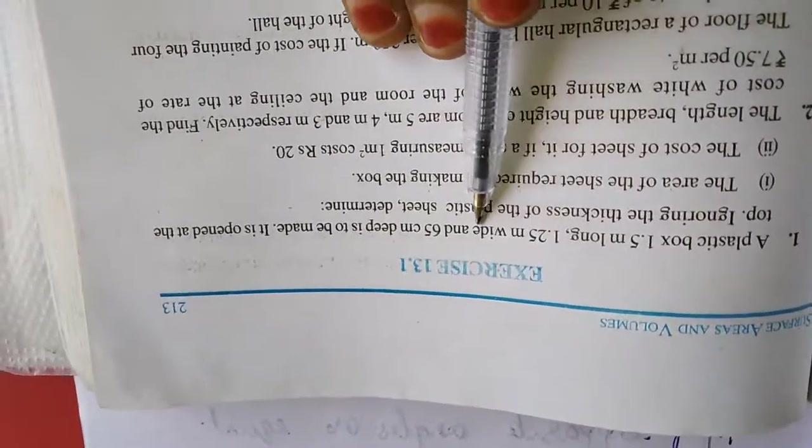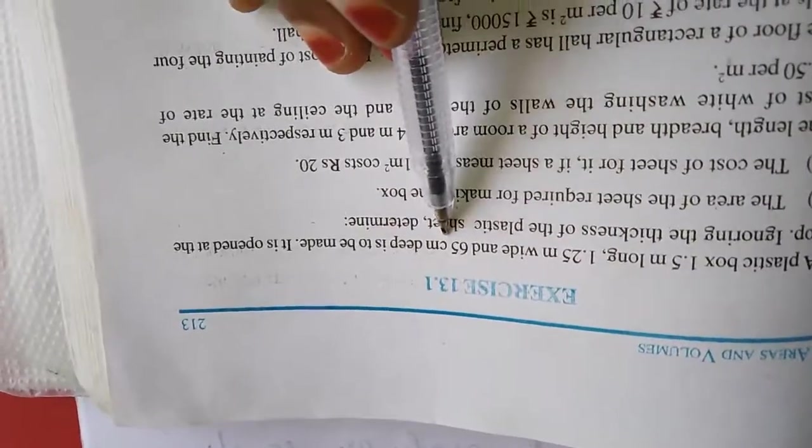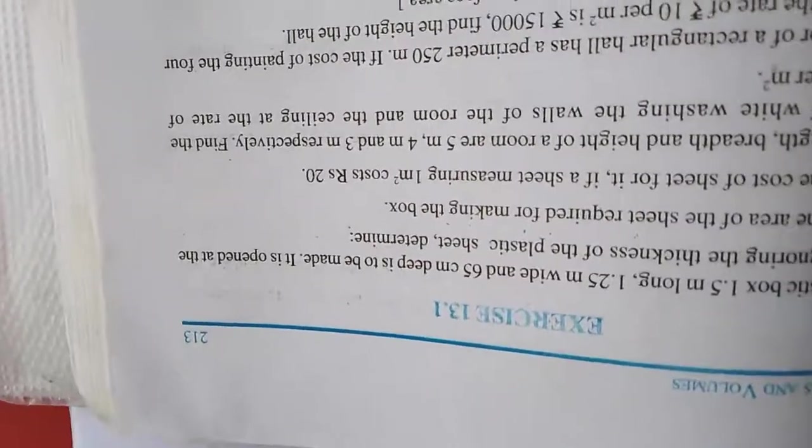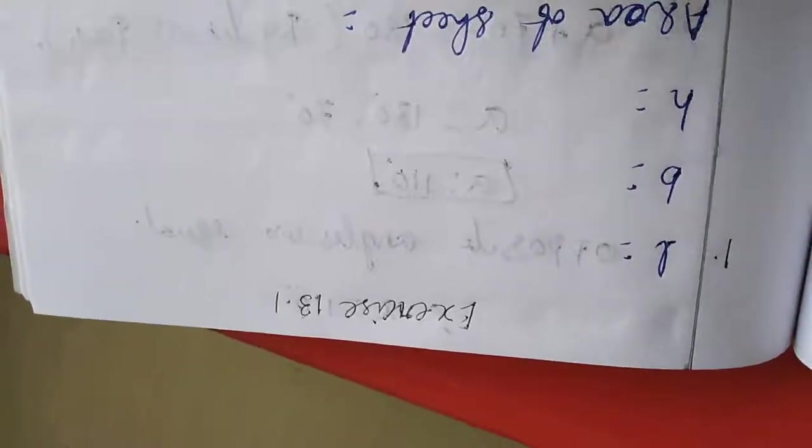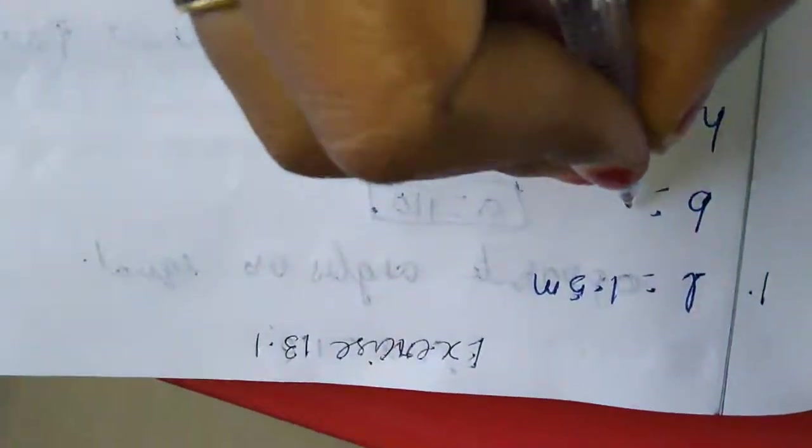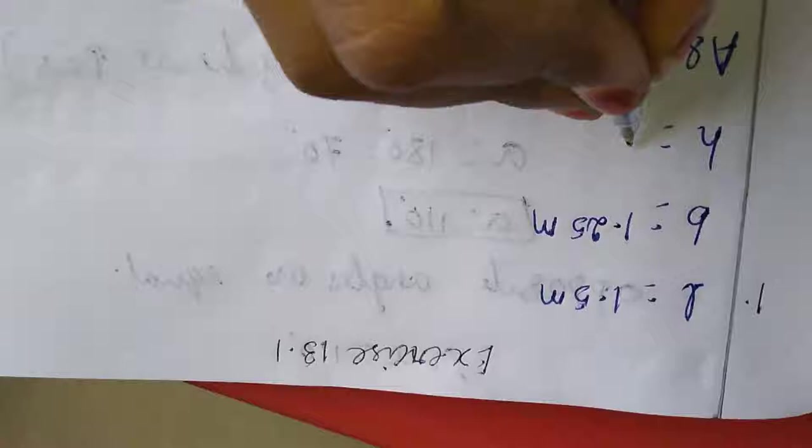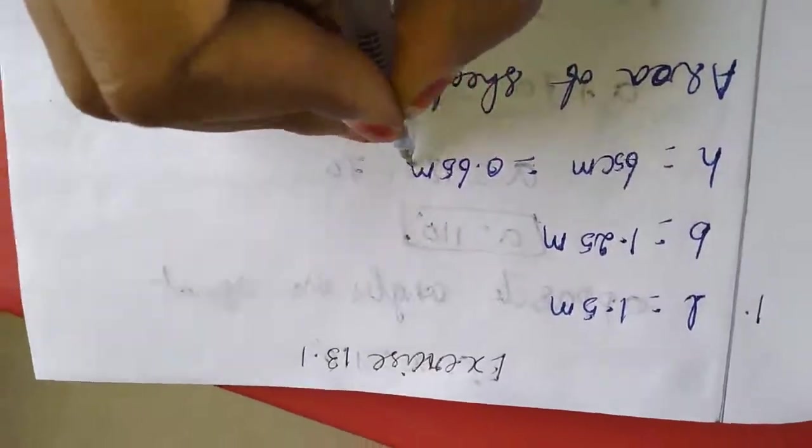Now we will move to the exercise sums. Example 13.1, first sum: A plastic box 1.5 meter long, 1.25 meter wide, 65 centimeter deep is to be made. It is opened at the top. Determine the area of sheet required for making the box. Top is opened, so we want to leave one LB. So LB plus 2 into BH plus LH, this is the formula.